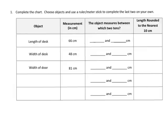It says complete the chart, choose the objects, use a ruler to complete the last two. Let's start with the length of the desk. It's 66 centimeters, and the idea is we're supposed to say the object measures between which two tens.